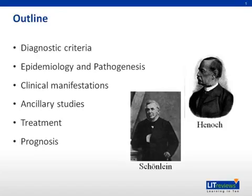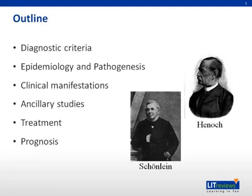The presentation outline includes diagnostic criteria, epidemiology and pathogenesis, clinical manifestations, ancillary studies, treatment, and prognosis of Henoch-Schönlein Purpura.